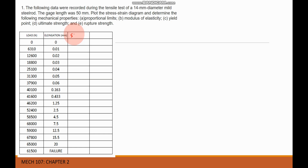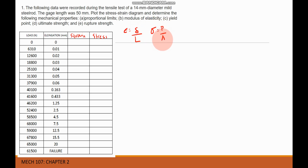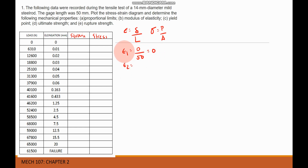Our first step is to determine the strain and the stress, where strain equals elongation divided by original length, and stress equals load over area. For strain 1, elongation is 0 and length is 50 mm, so strain 1 = 0. For strain 2, we have 0.01 divided by 50, which equals 0.0002.